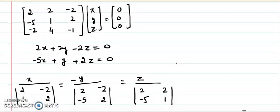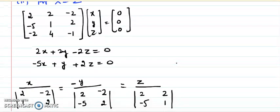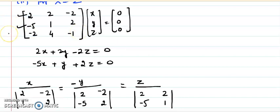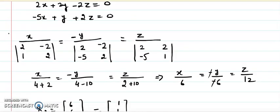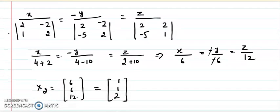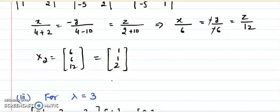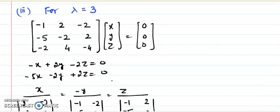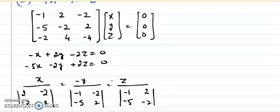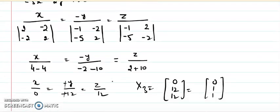For lambda equals 2, the diagonal entries shift by 1 more and using the same two-equation method I get (6, 6, 12), simplified to (1, 1, 2). For lambda equals 5, taking the first and second equations again and solving, I get (0, 12, 12), simplified to (0, 1, 1). Those are all three eigenvectors.